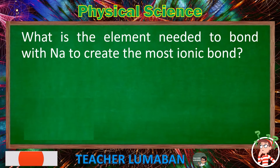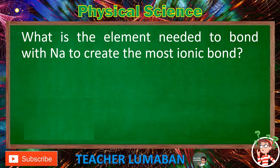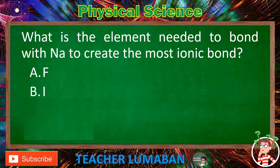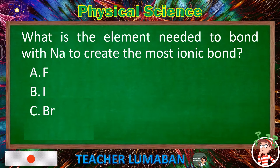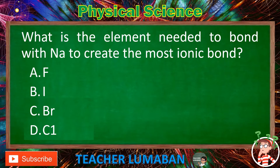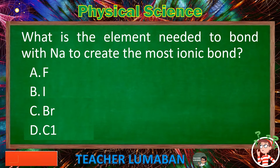What is the element needed to bond with Na to create the most ionic bond? Letter A: F. Letter B: I. Letter C: Br. Letter D: Cl. Choose the suitable answer based on the given choices in 5 seconds.